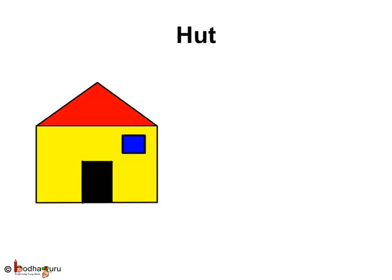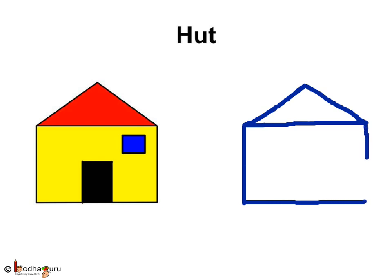Now, now that you know so many shapes, it will be easy to draw a hut. Look at the hut. First, we draw a triangle. Below it, a rectangle. Then, make a door in shape of a rectangle. And, finally, a square window. Look, the hut is ready.